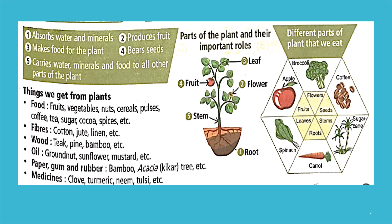Now let's see the different parts of a plant that we eat — we eat almost all parts. Seeds: for example, coffee. Stems: for example, sugarcane. Root vegetables: like carrot and turnip. Leafy vegetables: like spinach. Fruits: like apple. Flowers: like broccoli and cauliflower.